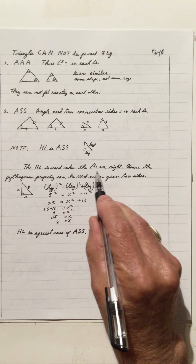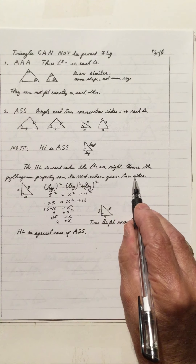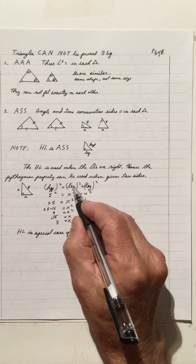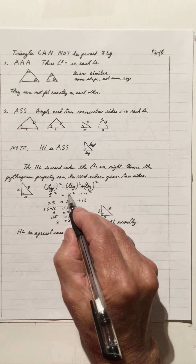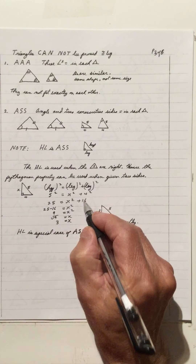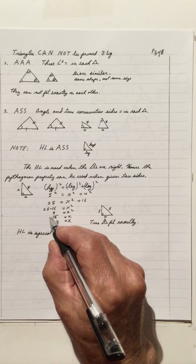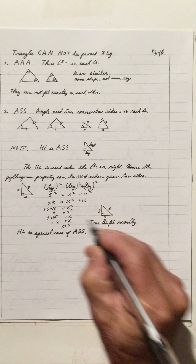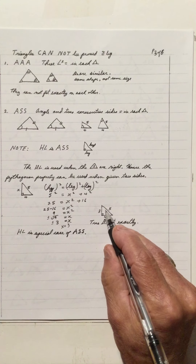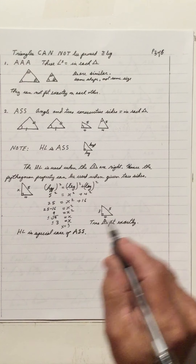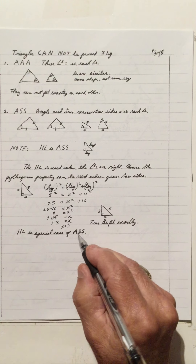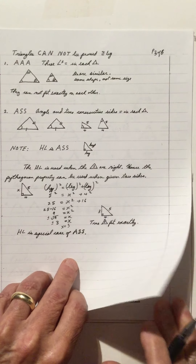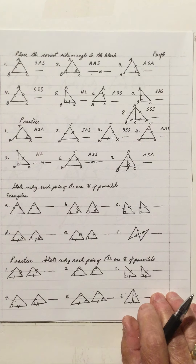Note: HL is an ASS, but it's a special case. HL is used when the triangles are right triangles, so the Pythagorean theorem can be applied to find the missing side. For example, given a right triangle with legs 5 and 4: hypotenuse² = leg² + leg², so 5² = x² + 4², giving 25 = x² + 16, x² = 9, x = 3. If you have two right triangles with the same hypotenuse and leg, they will fit exactly on each other — so HL is a special ASS. ASS cannot prove triangles congruent, but if the angle is a right angle with two sides, then HL applies.